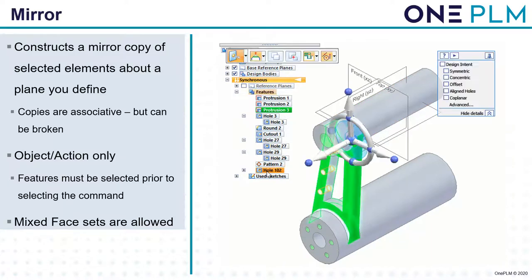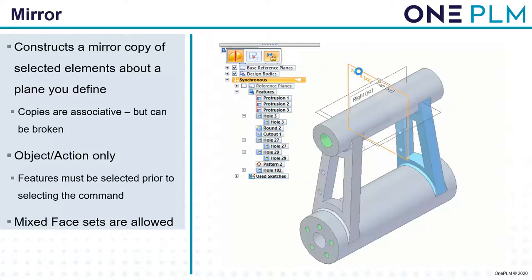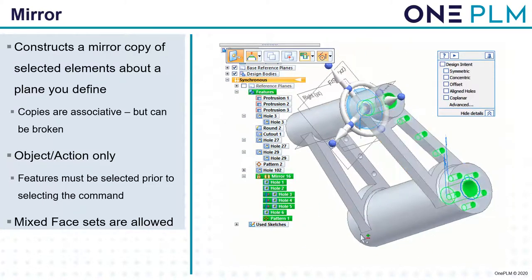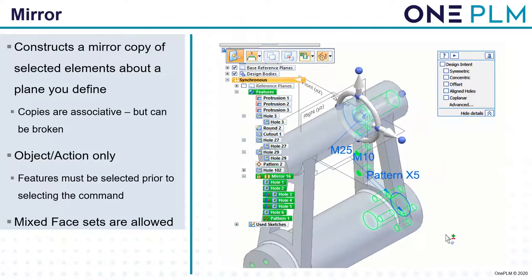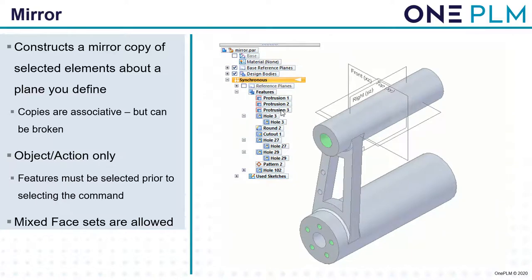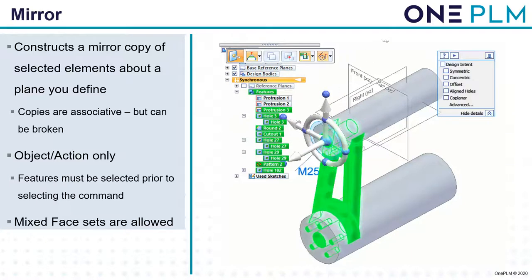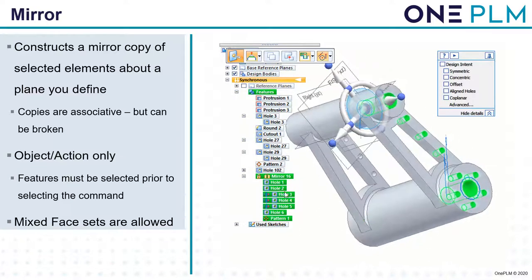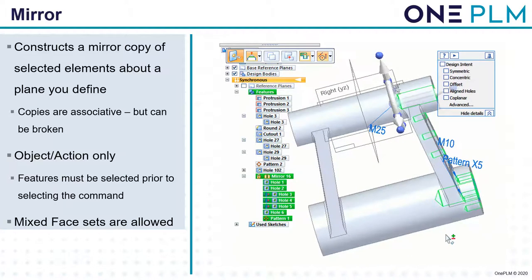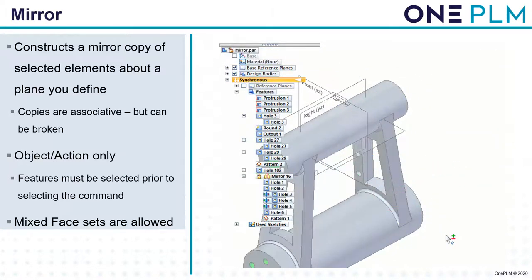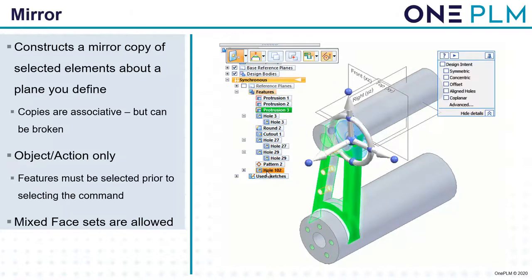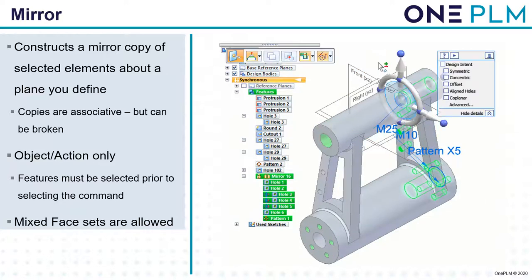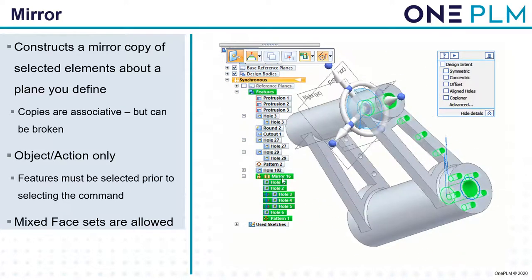Other feature reuse options include mirror — this constructs a mirror copy of selected elements about a plane we define. The copies are associative but can be broken. Where it says 'Mirror 16,' the lock icon shows it is associative. We can right-click on the mirror and click drop to make those elements no longer associative. Mirror is object-action, so we have to select features first then select the mirror command, then select the plane. Mixed face sets are allowed — protrusions, holes, and patterns can all be selected and mirrored at the same time.